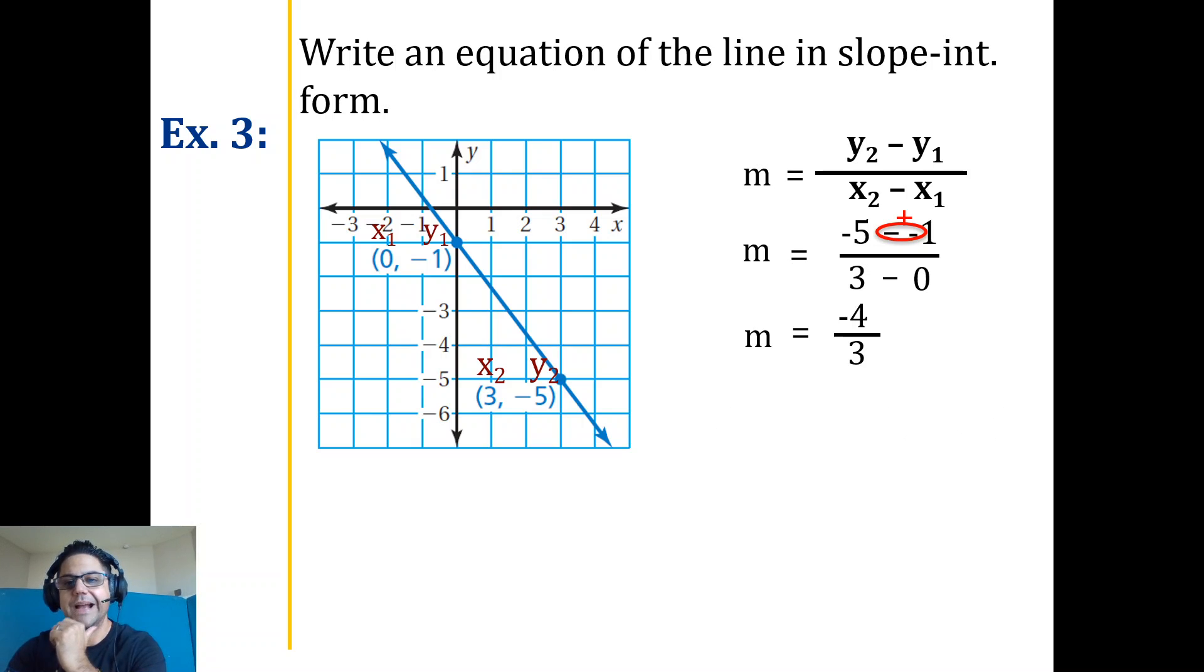Let's actually go back to the picture. If you want to do a right triangle again, it would be down 1, 2, 3, 4, right 1, 2, 3. Again, rise over run, great resource when you have the graph. And then basic substitution for your answer.